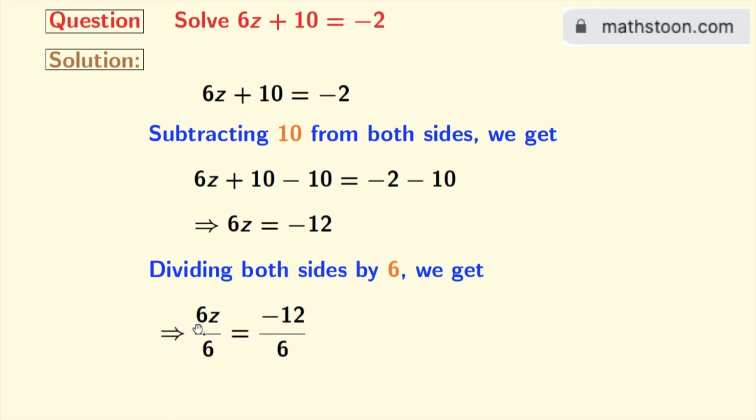In the left hand side the 6s get cancelled and we are left with z. And in the right hand side we have minus 12 by 6 which is minus 2. So finally we get z equal to minus 2 as our answer.